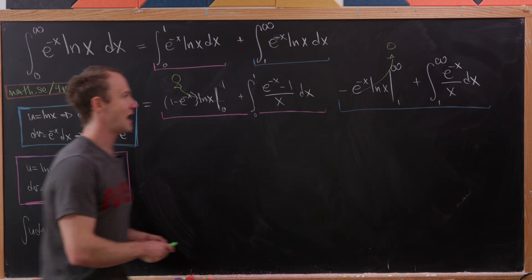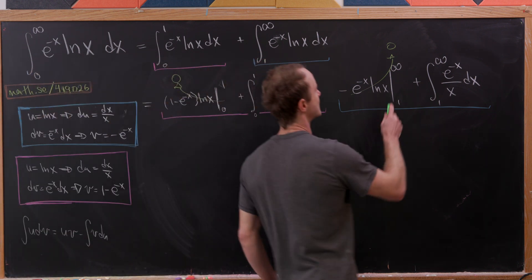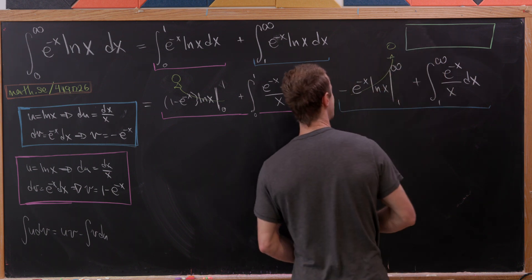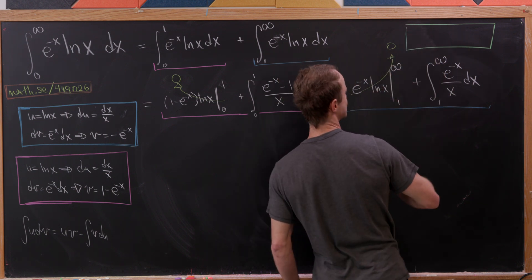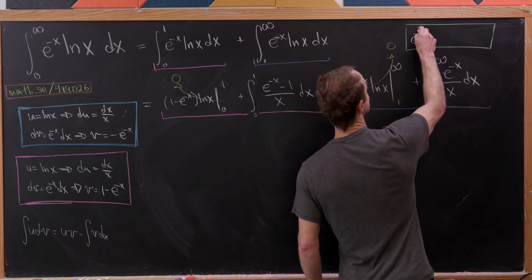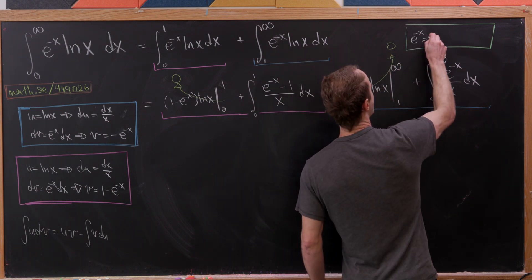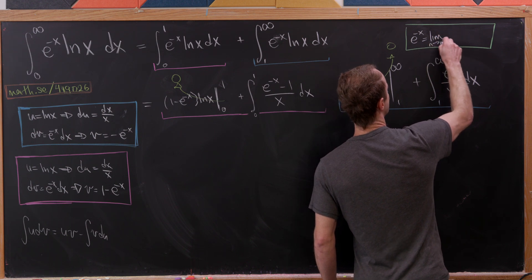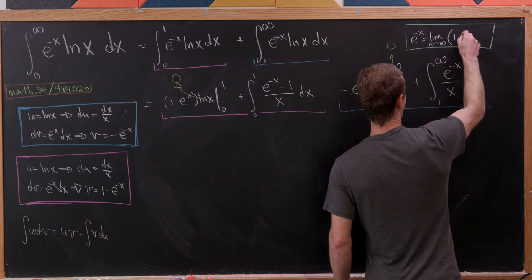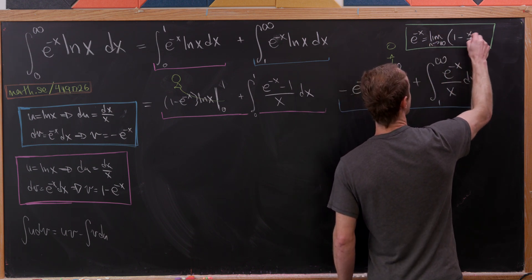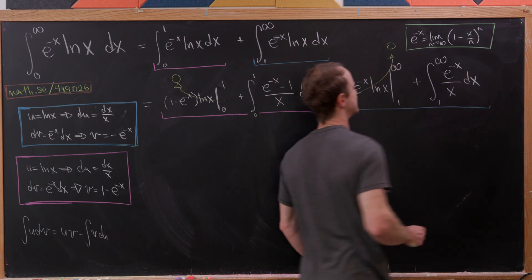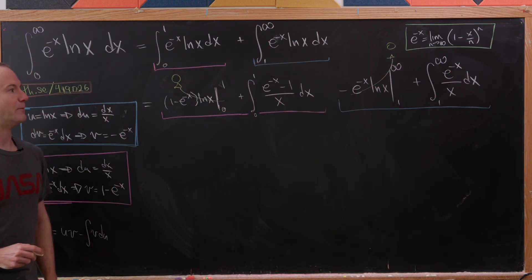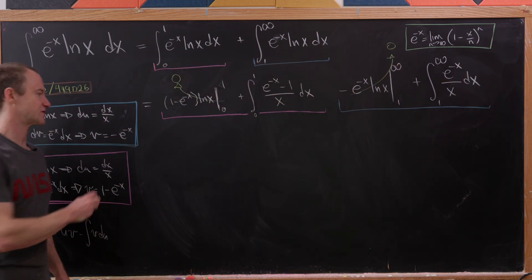Next, I'm going to use the following limit definition of e to the minus x: the limit as n goes to infinity of (1 minus x over n) raised to the n power. And I'm going to use that in both of these integrals.